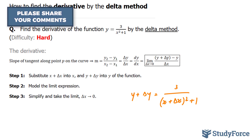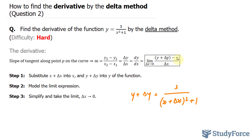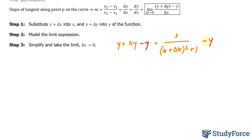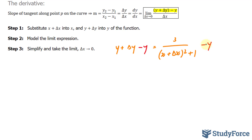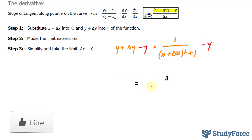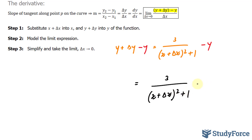To get from here to here, I have to subtract both sides by minus y. And remember what y is equal to — y is equal to 3 over x squared plus 1. So in my next step, I'll rewrite the right side, replacing y with what the function was. I end up with 3 over x plus delta x to the power of 2 plus 1, minus 3 over x squared plus 1.